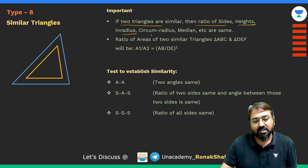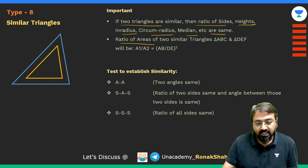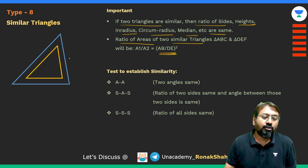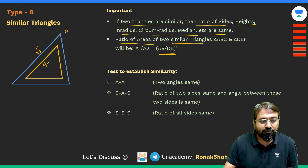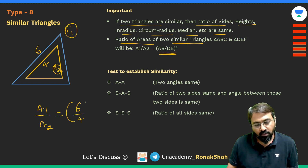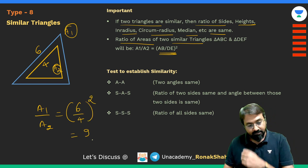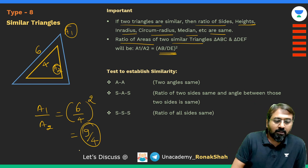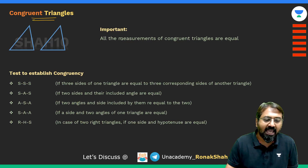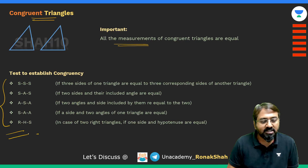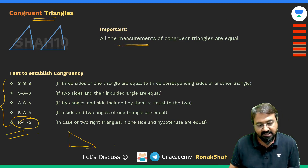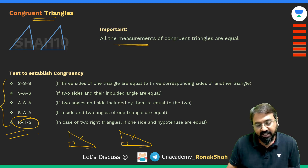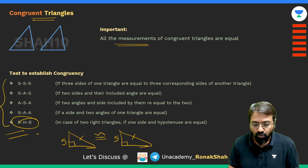If two triangles are similar, the ratio of their sides, heights, inradius, circumradius, and medians are all the same. The ratio of the areas of two similar triangles is the square of the ratio of their sides. For example, if one side is 4 and the other is 6, then A1/A2 = (6/4)² = 9/4. Congruent triangles are exactly the same — all measurements are identical. The RHS test states that in two right-angle triangles, if the hypotenuse and one side are equal, the triangles are congruent.